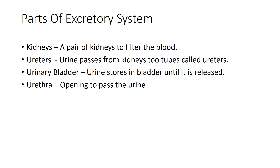We have a pair of kidneys. Kidneys are situated inside the abdomen towards the back side, on either side of the backbone — one on the left side and one on the right side. From the kidneys come two tubes called ureters. The urine formed in both kidneys travels through the ureters to the urinary bladder, which is the third important part of the excretory system.